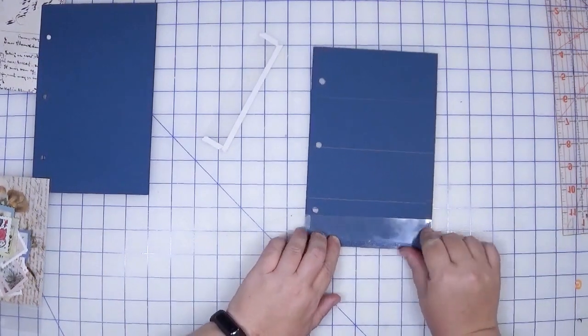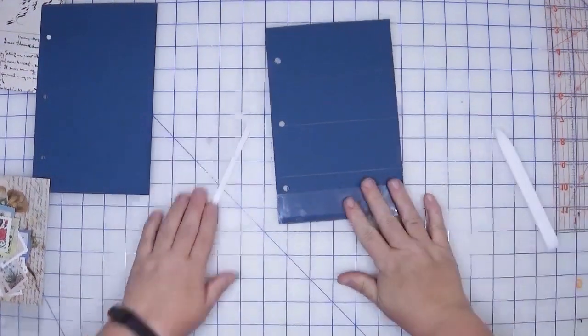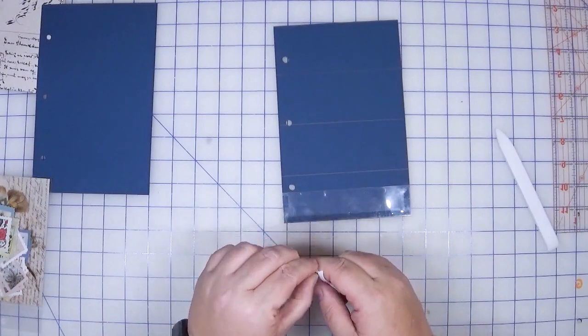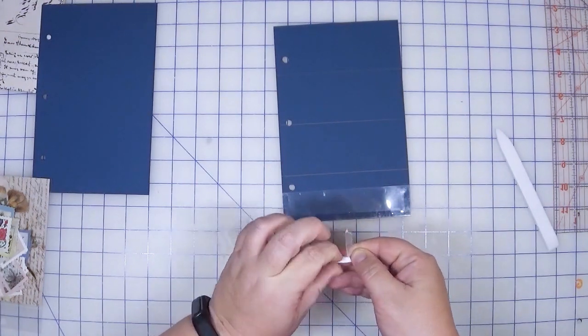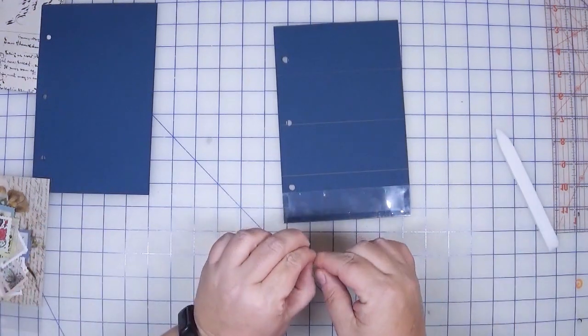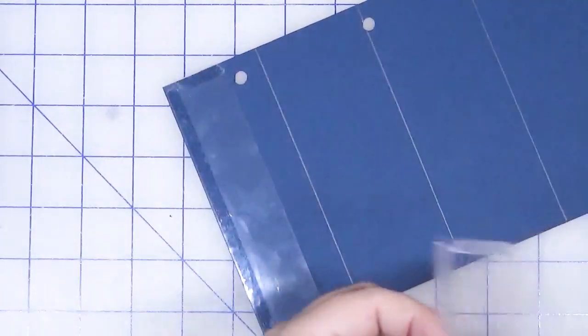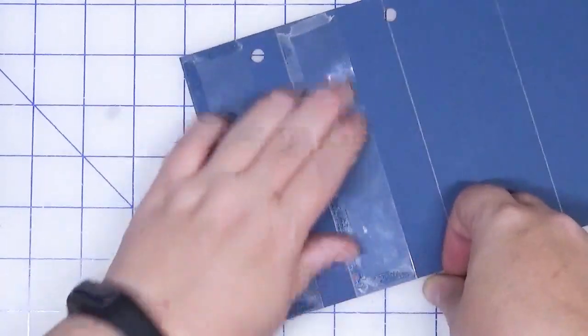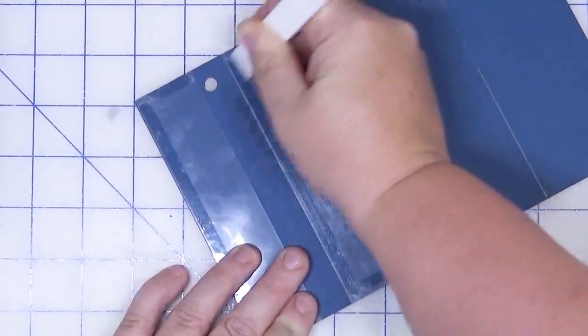We're just going to peel these off and align that along the bottom edge. I like to give this a good press. If you have a bone folder, that is a great tool. Take the next one - it's just repeat until all of the pockets are on. Sometimes I think the hardest part is getting the release paper to release. This is where the line comes in very handy. It makes it much easier to make sure that this is where I want it to go. Just like that you have two pockets.